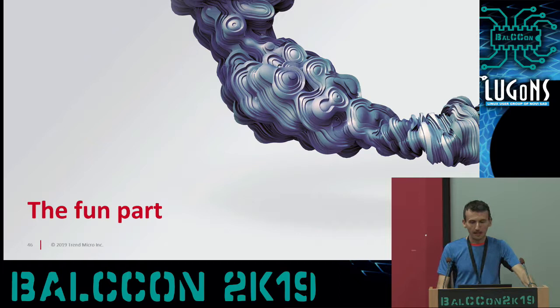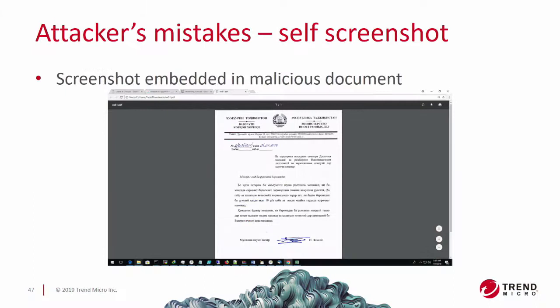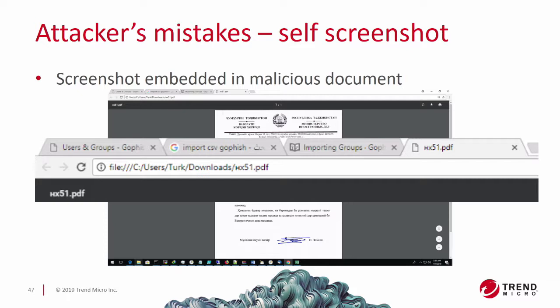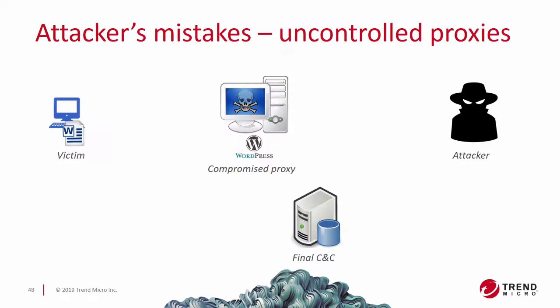For the last part, I'll talk about some mistakes the threat actor made. The first was quite interesting: while analyzing one of their malicious documents, we found an embedded screenshot - someone probably by accident took a screenshot of their computer and accidentally embedded it in the document. In this screenshot you can see at the top: 'import CSV,' 'GoPhish,' and some letters in Arabic or Farsi. The username in this case was 'Turk' - probably someone targeting Turkey - with Arabic letters and GoPhish, which is a phishing toolkit.